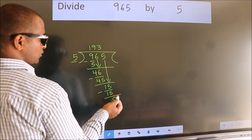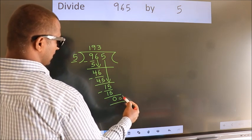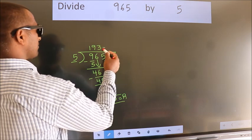No more numbers to bring it down. So we stop here. This is our remainder. This is our quotient.